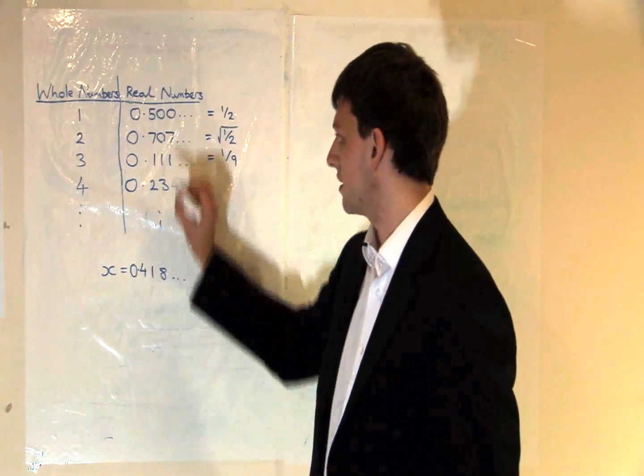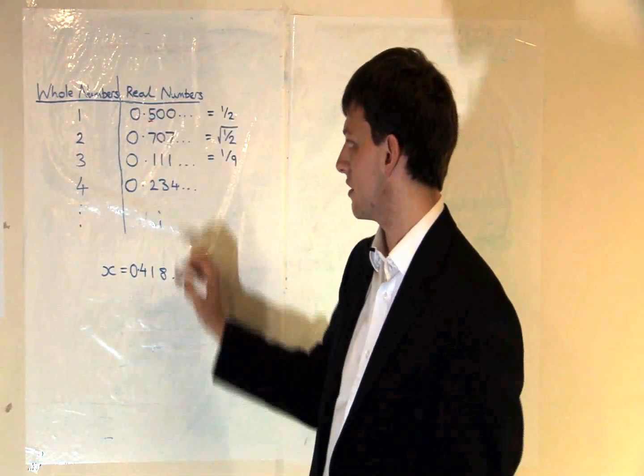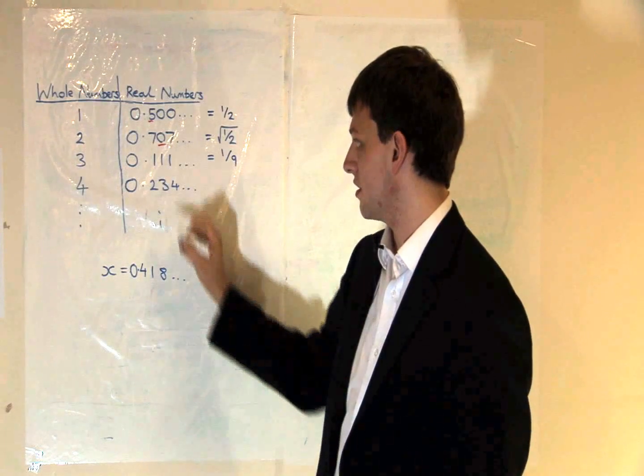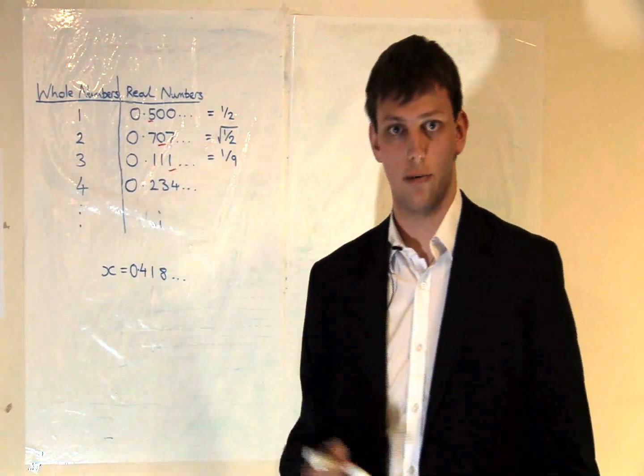Now let's define a new real number x that doesn't appear anywhere in the right hand column. We'll choose the first digit of x to be anything different from this, the second digit to be anything different from this, the third to be different from this, and so on.